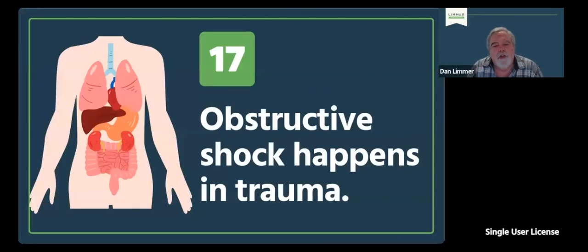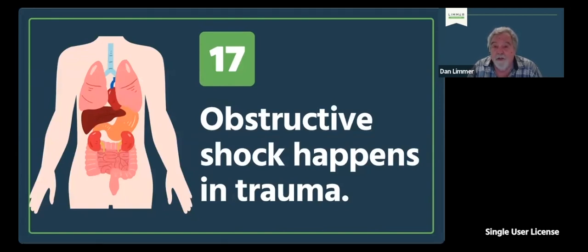Number 17, obstructive shock happens in trauma — our cardiac tamponade, our tension pneumothorax. Tension pneumothorax involves a lung, but don't forget tension pneumothorax creates a circulatory problem. We collapse that lung, we put pressure in the chest cavity. We're taking our inferior vena cava and saying you're not bringing blood back. That's not good, and it's a big circulatory issue.